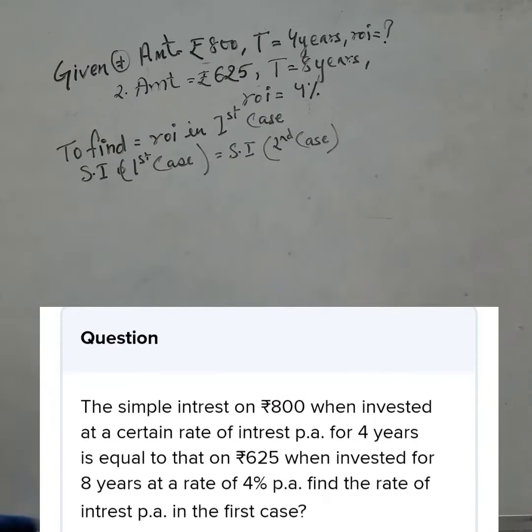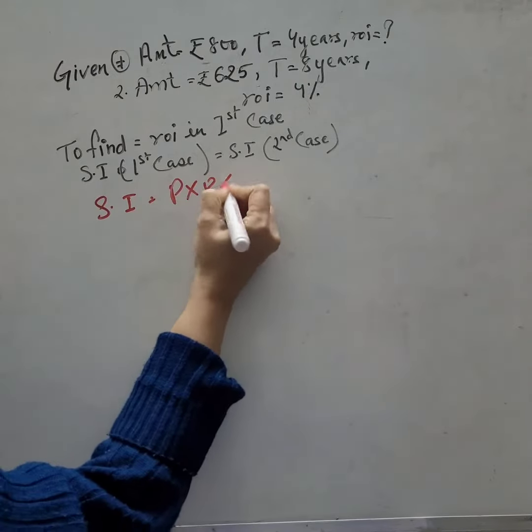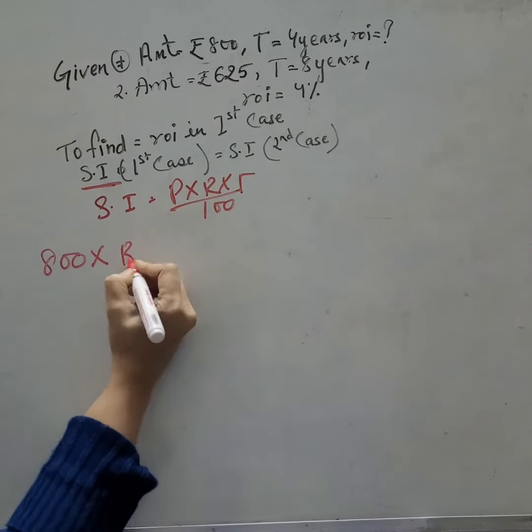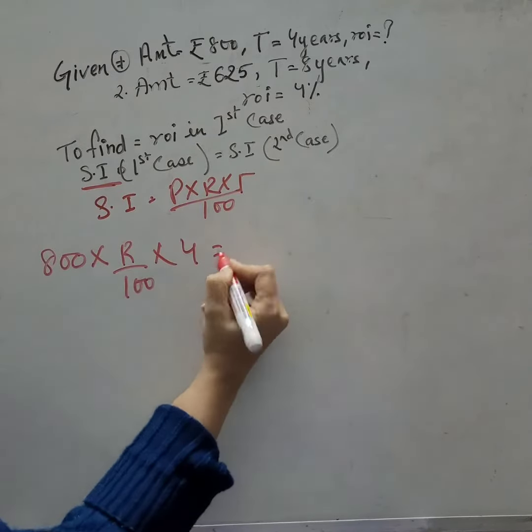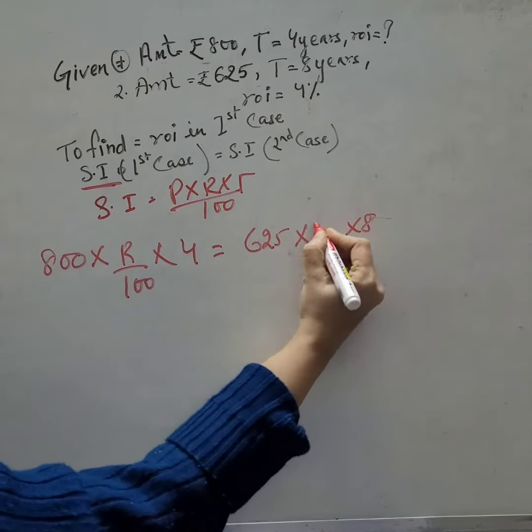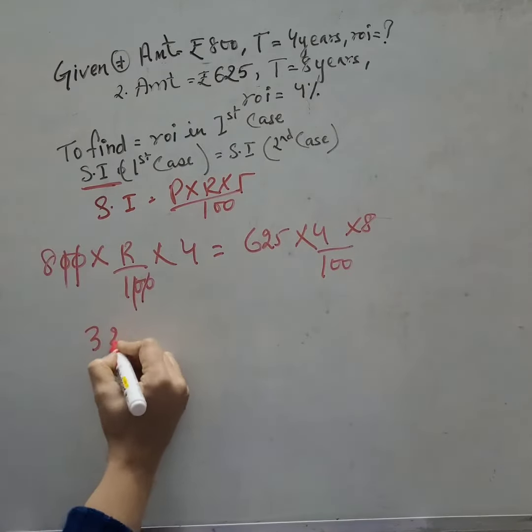So that is the simple interest formula. Let me write down the line. Time is 4, this is 625, multiply by time and rate of interest. We get 32R.